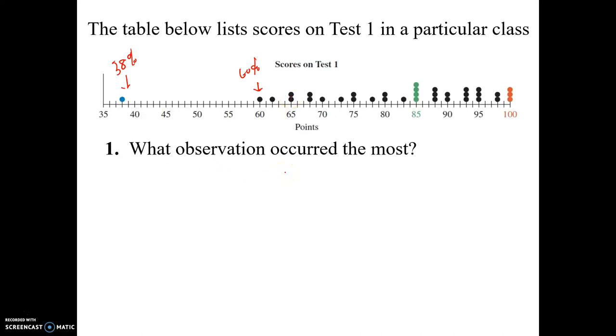Now the question here for number one is what observation occurred the most? So which score was the most common score? Let's count the most number of dots. So two people got 65, two people got 68, two people got 80.